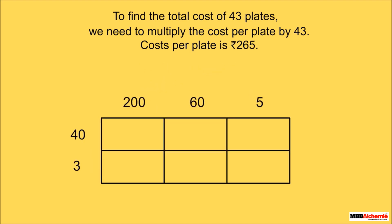Then she wrote the expanded numbers in a table. Now she multiplies 200 by 40 and fills in the table. 200 into 40 is equal to 8000. Similarly, she multiplies other numbers and fills in the table. 60 into 40 is equal to 2400. 5 into 40 is equal to 200. 200 into 3 is equal to 600. 60 into 3 is equal to 180. 5 into 3 is equal to 15.